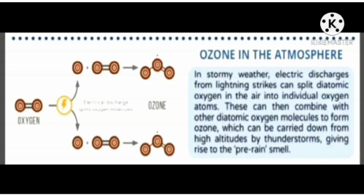Ozone in the atmosphere. In stormy weather, electric discharges from lightning strikes can split diatomic oxygen in the air into individual oxygen atoms. These can then combine with other diatomic oxygen molecules to form ozone, which can be carried down from high altitudes by thunderstorms, giving rise to the pre-rain smell.